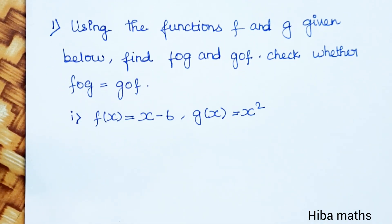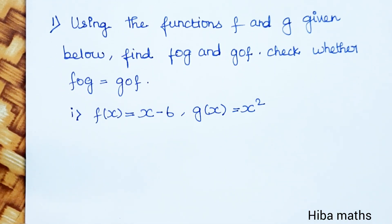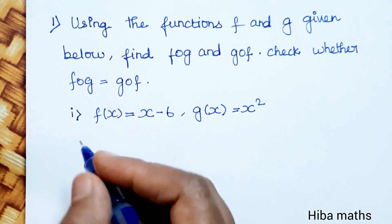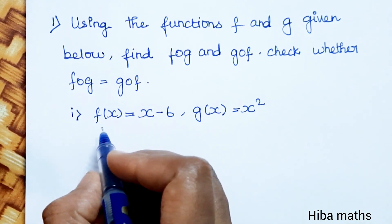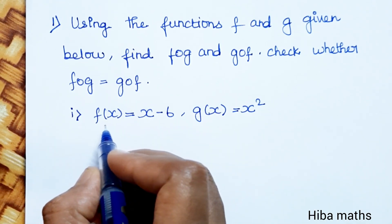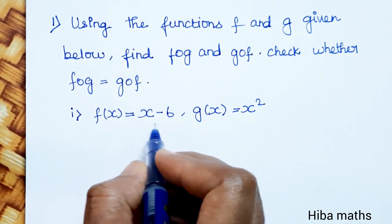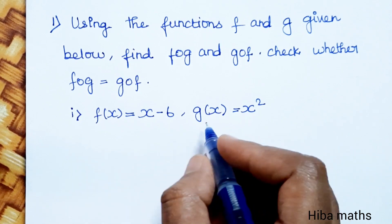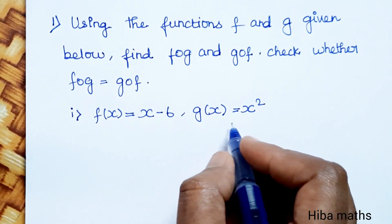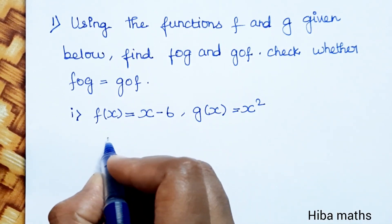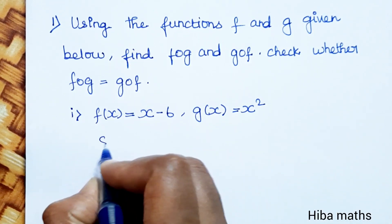So, there are 5 subdivisions; we will solve them one by one. First question: f of x is equal to x minus 6, and g of x is equal to x square.